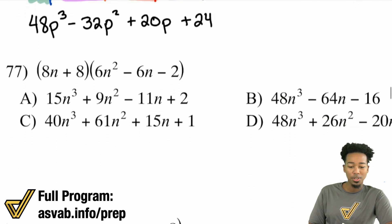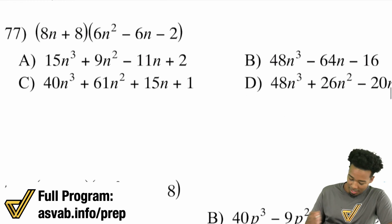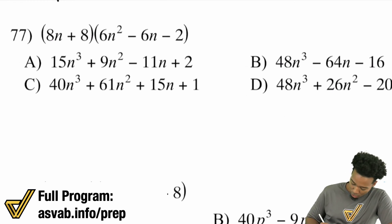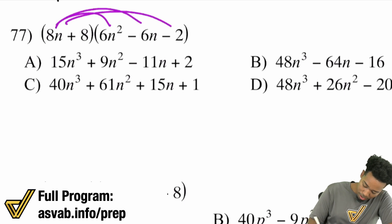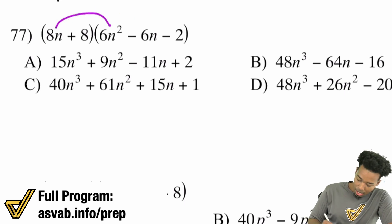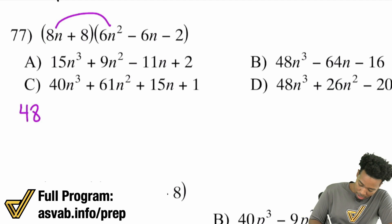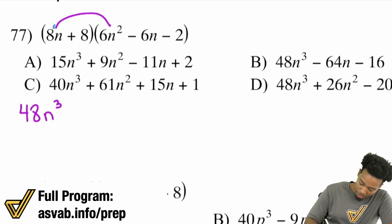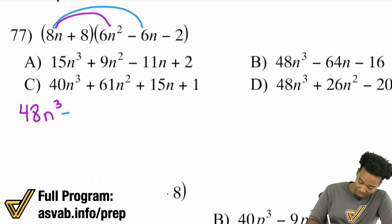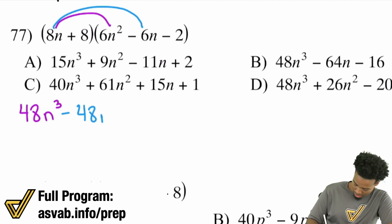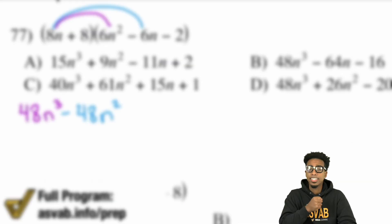Let's take care of another one. In this example, 8n is going to go with all three terms. So: 8 times 6 is 48, n times n² is n³. Next: 8n times negative 6n — negative times a positive is negative — 8 times 6 is 48, n times n is n².